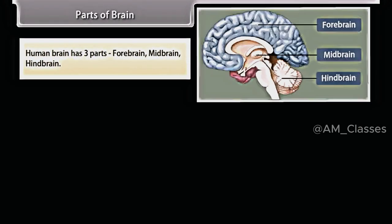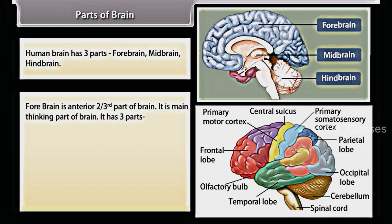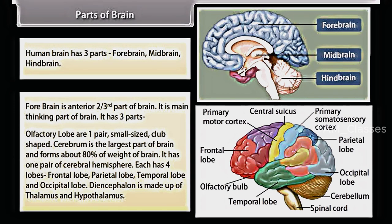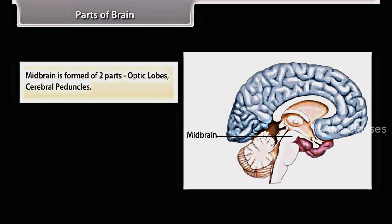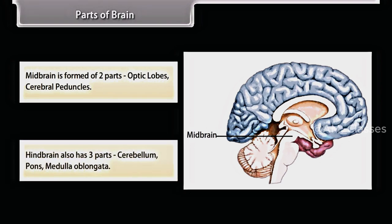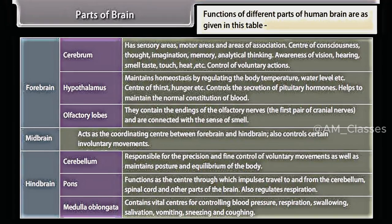The human brain has three parts: forebrain, midbrain, and hindbrain. The forebrain is the anterior two-thirds of the brain and the main thinking part. It has three parts: olfactory lobes (one pair, small-sized, club-shaped); cerebrum, the largest part of the brain forming about 80% of its weight, with one pair of cerebral hemispheres each having four lobes — frontal, parietal, temporal and occipital; and diencephalon, made of thalamus and hypothalamus. The midbrain is formed of two parts: optic lobes and cerebral peduncles. The hindbrain also has three parts: cerebellum, pons, and medulla oblongata. Functions of different parts of the human brain are as given in this table.